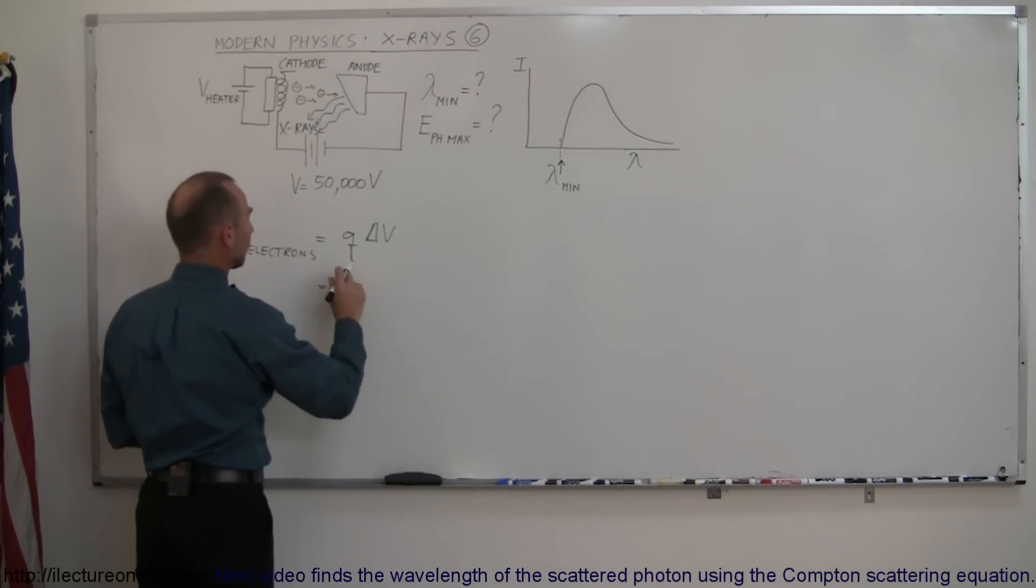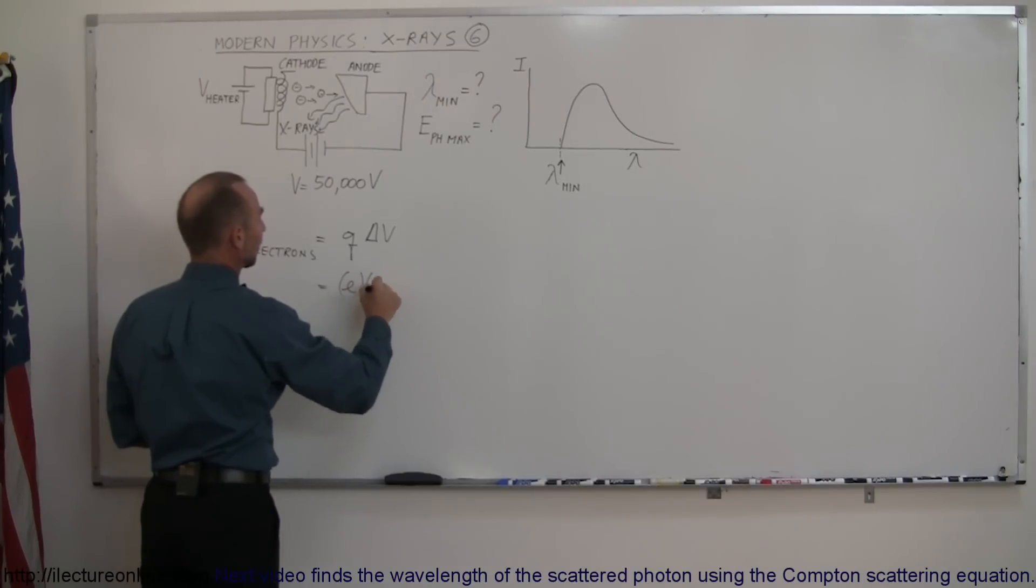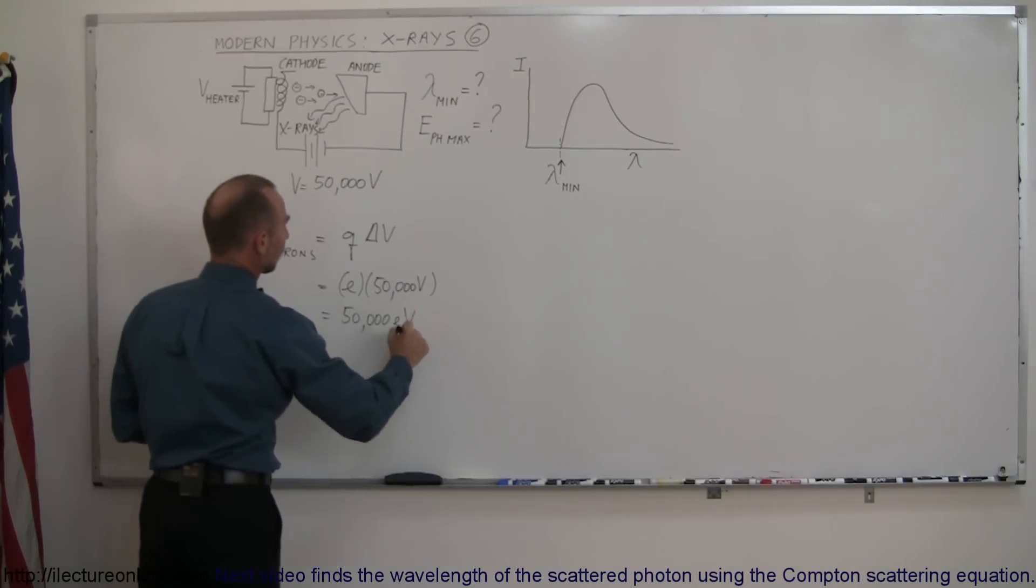So this is equal to one Q or one charge, an electron charge, times the delta V of 50,000 volts. And so this would be equal to 50,000 electron volts of energy.